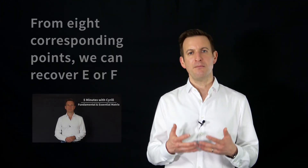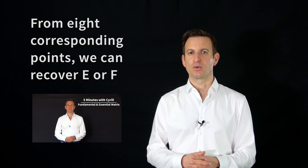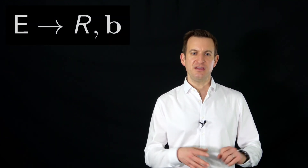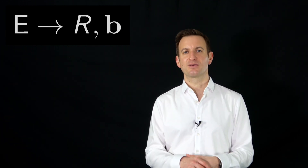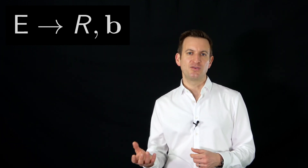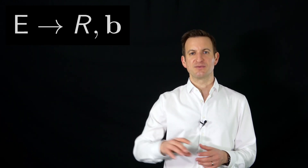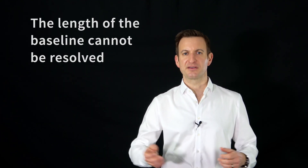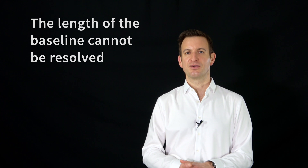So from 8 corresponding points, we are able to recover E or F. In the case of E — the calibrated case — we can actually decompose E further into the rotation matrix and a baseline vector that tells us how camera two looks with respect to camera one and along which direction it has moved. The only thing we do not know is the length of this direction vector, because of the scale ambiguity which we cannot resolve.